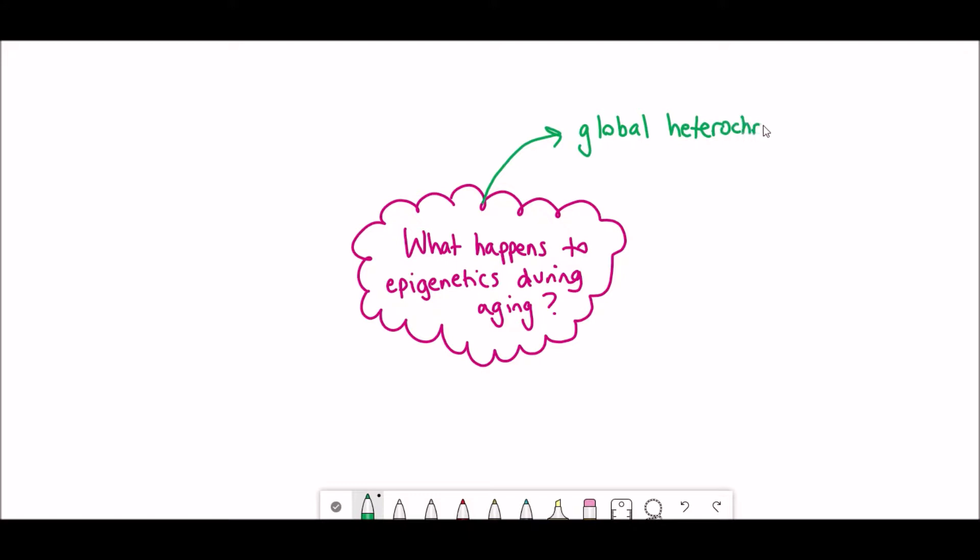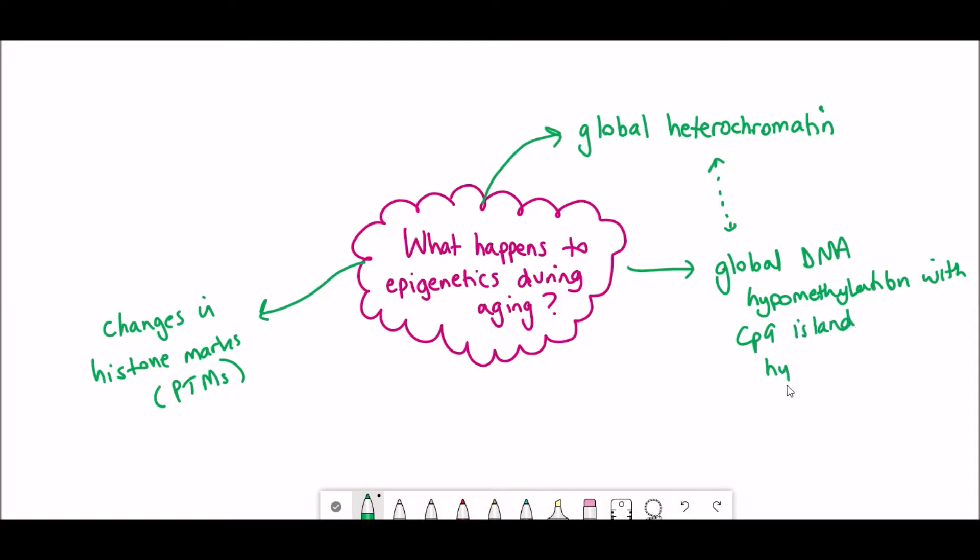During aging, a variety of changes to the epigenetic marks have been seen, and this includes global heterochromatin, so that involves compaction of the chromatin. There's changes in the histone marks and their modifications. There's also DNA hypomethylation on a global scale and there's also hypermethylation, so increased methylation at these so-called CpG islands, which we'll talk about a bit more later.